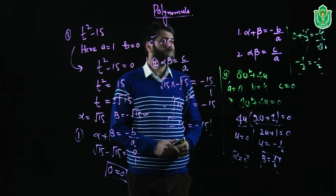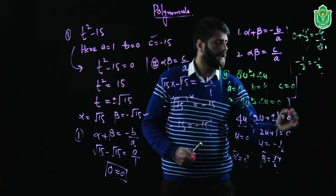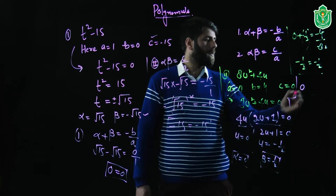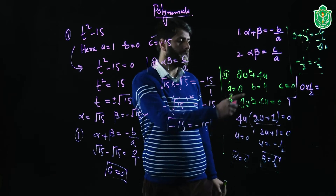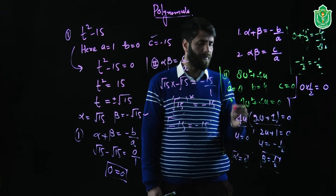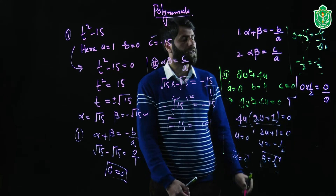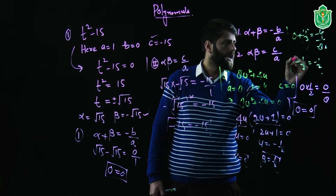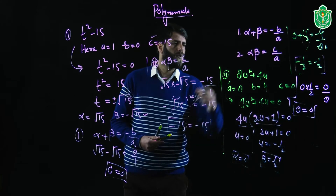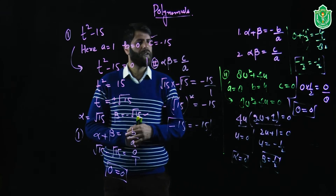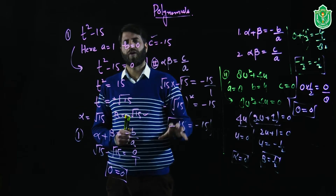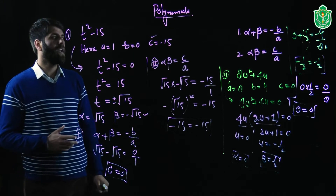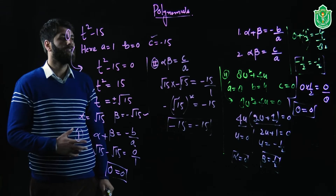The second relationship: alpha into beta equals c divided by a. Alpha is 0, beta is minus 1 by 2, so 0 into minus 1 by 2 equals 0. And c divided by a is 0 divided by 8, which is 0. So 0 equals 0 — verified. This is the product of zeros and the sum of zeros. Both relationships are verified. We conclude that alpha plus beta equals minus b by a and alpha into beta equals c by a.